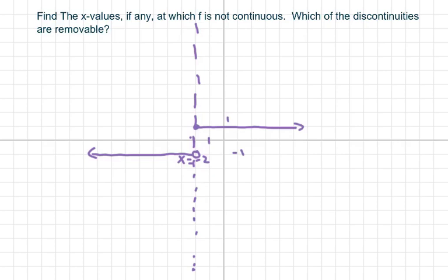Hi everyone. We're going to find the x-values, if any, at which f is not continuous and which of the discontinuities are removable. What we have is f of x equals absolute value of x plus 2 over x plus 2.